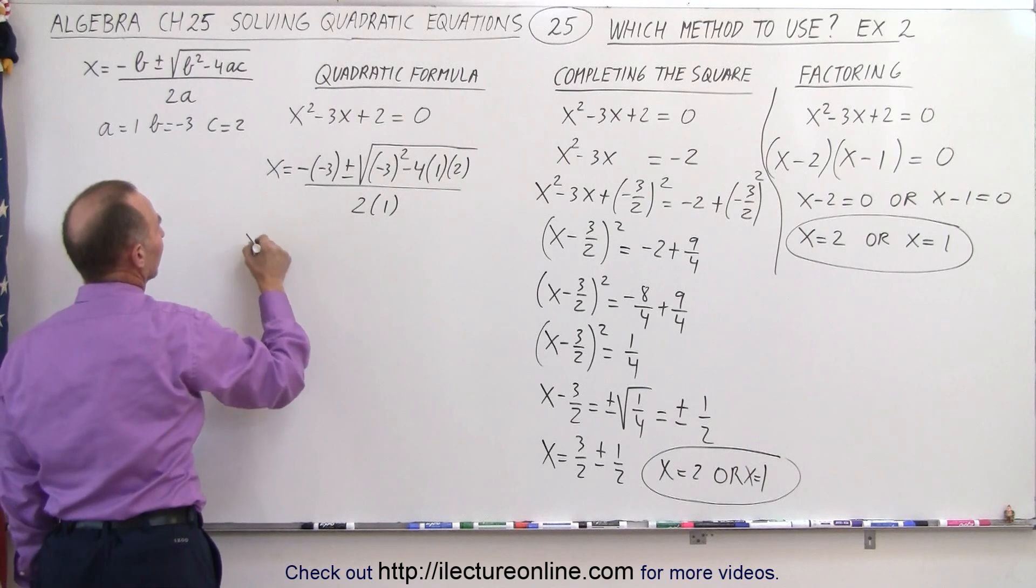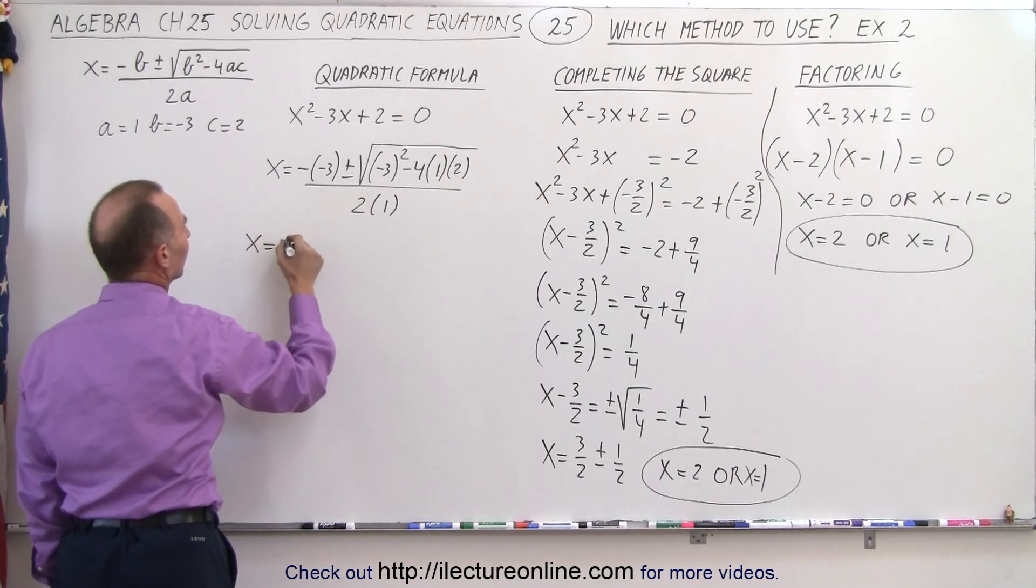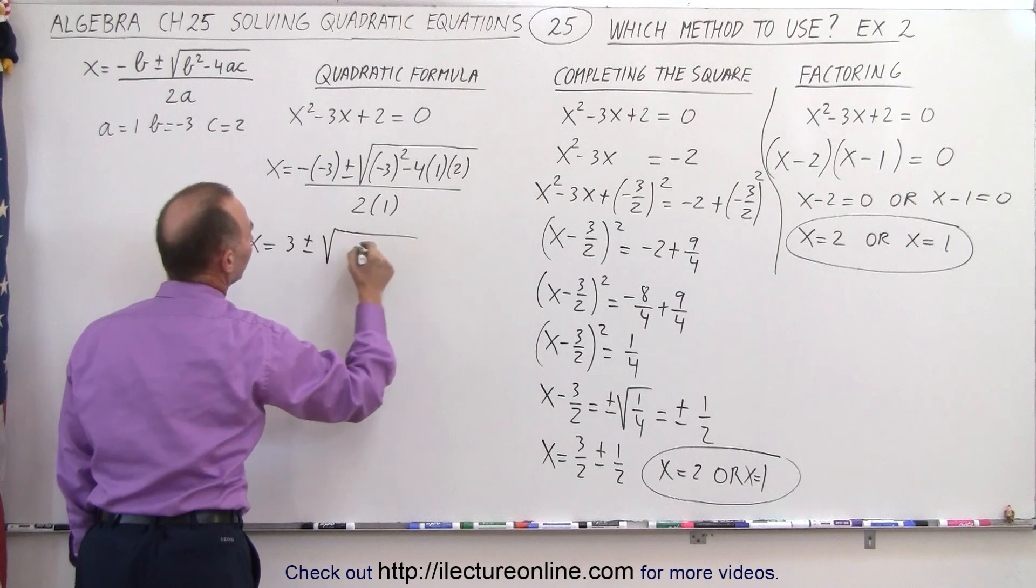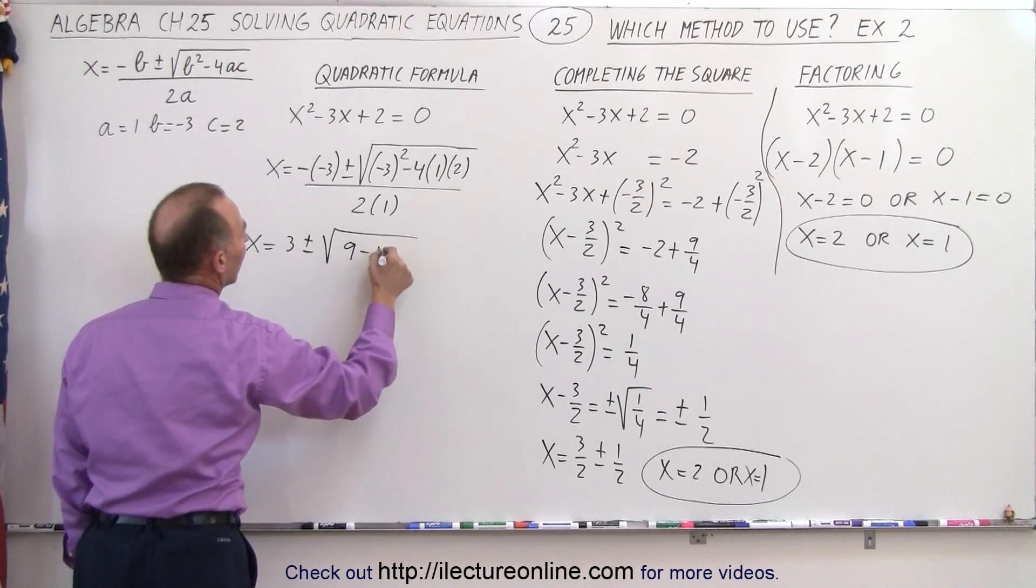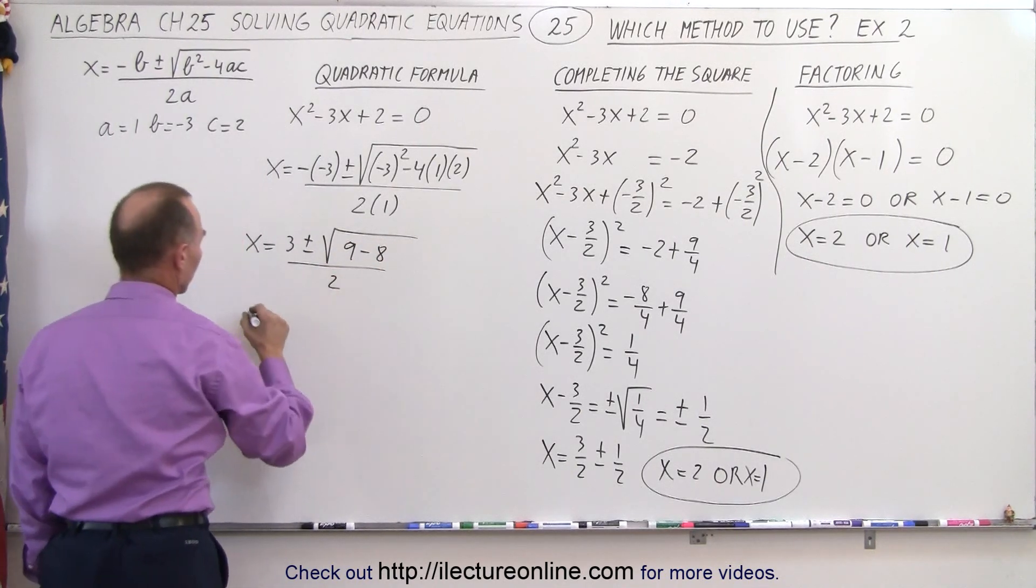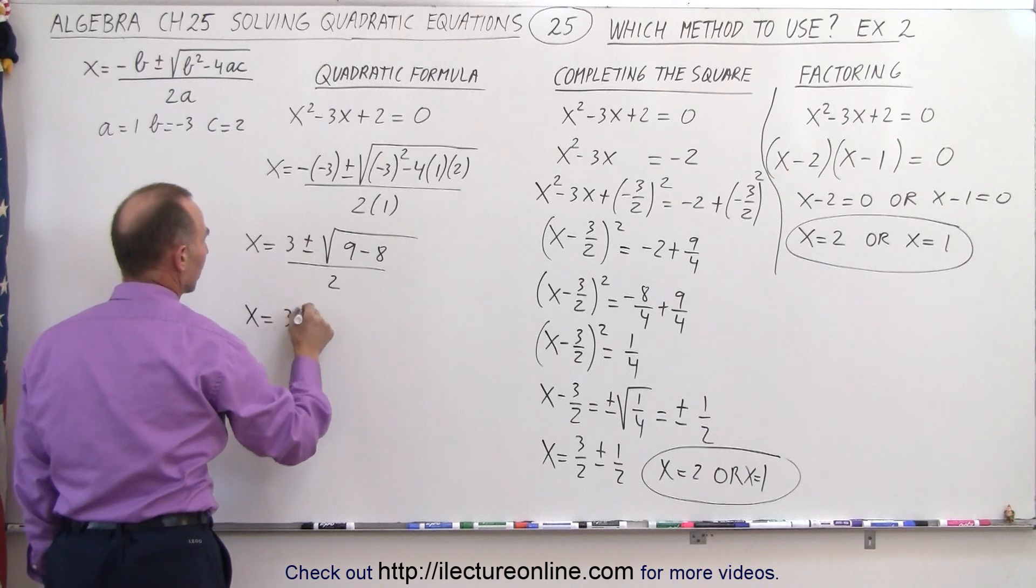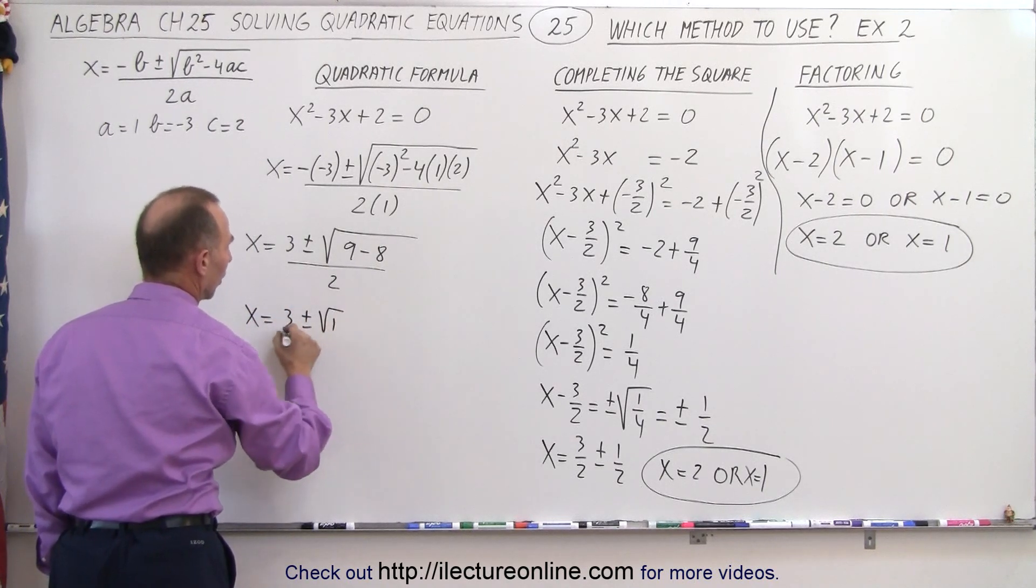All right, simplifying this. X is equal to minus times the minus, which is plus, plus or minus the square root of 9 minus 8, all divided by 2. So X is equal to 3 plus or minus the square root of 1 over 2.